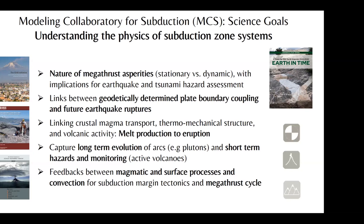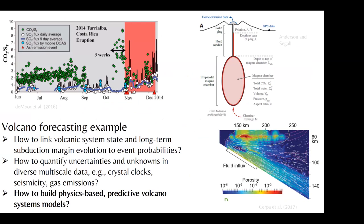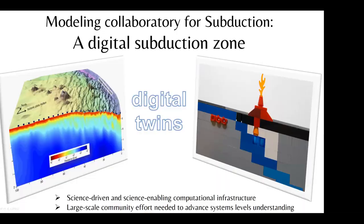In the context of volcanoes, we might ask: how do we link an understanding of the long-term thermochemical transport in a subduction zone with a physical understanding of what is happening in the magma chamber? How does that relate to things we observe at the surface in terms of time-dependent gas fluxes? And how can we convert an integrative physical model by means of assimilating data to build physics-based models that can be used for prediction of volcano behavior in an integrative fashion?